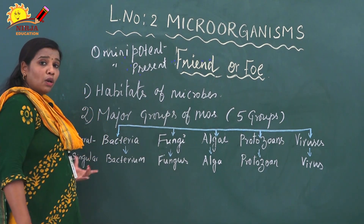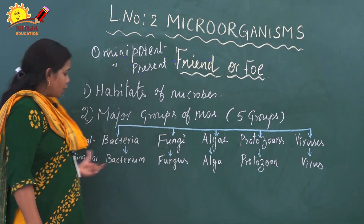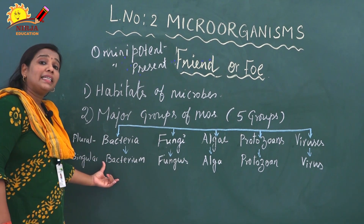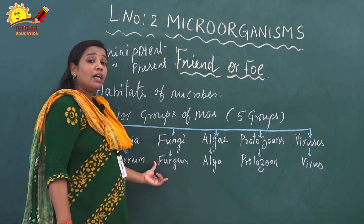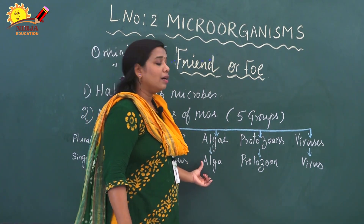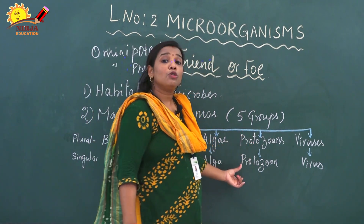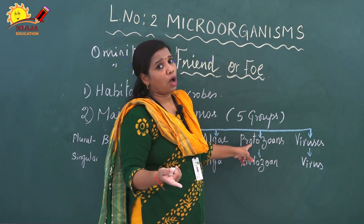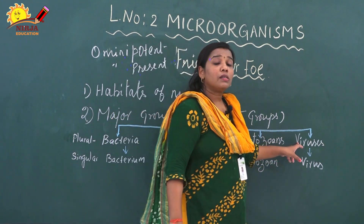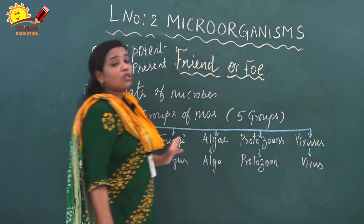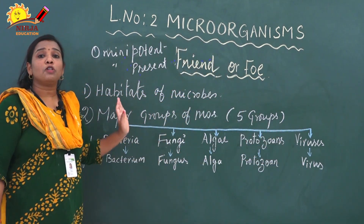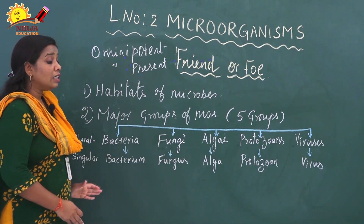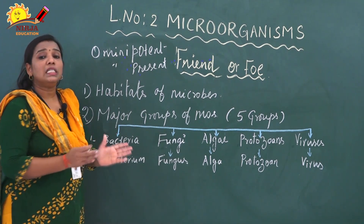These names are mostly in plural form. In singular form: bacteria → bacterium, fungi → fungus, algae → alga, protozoa → protozoan, viruses → virus. These are the 5 major types of micro-organisms, and this is very important — we have to learn each one in detail.